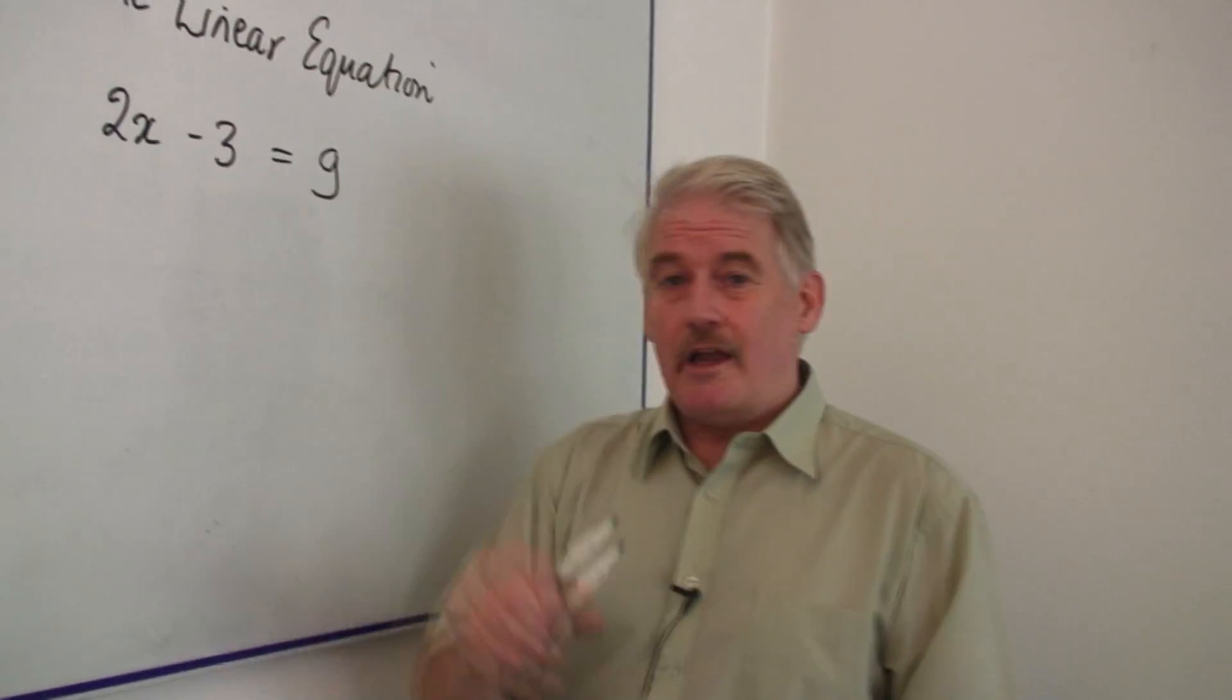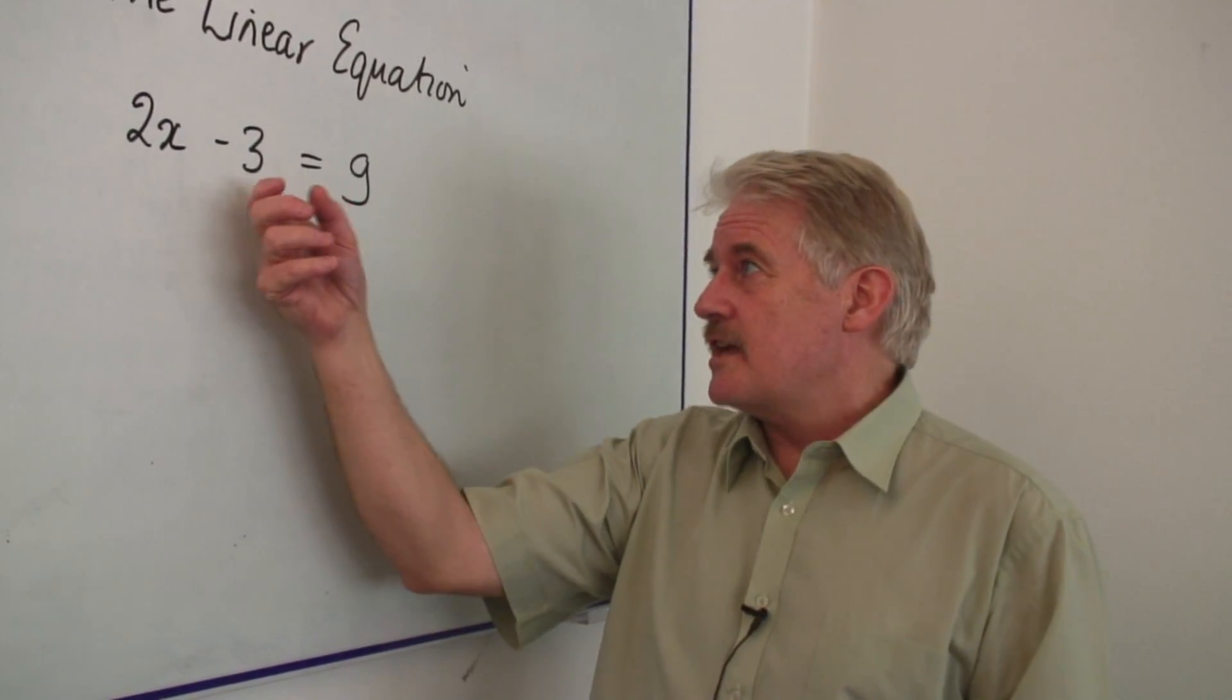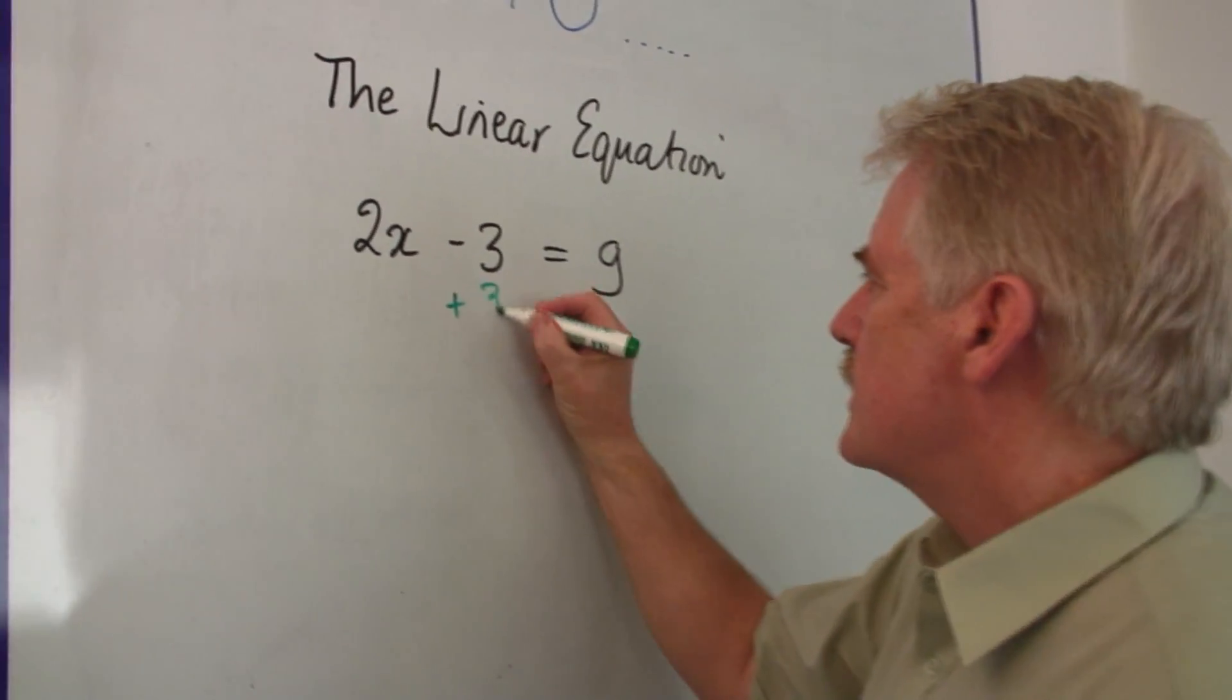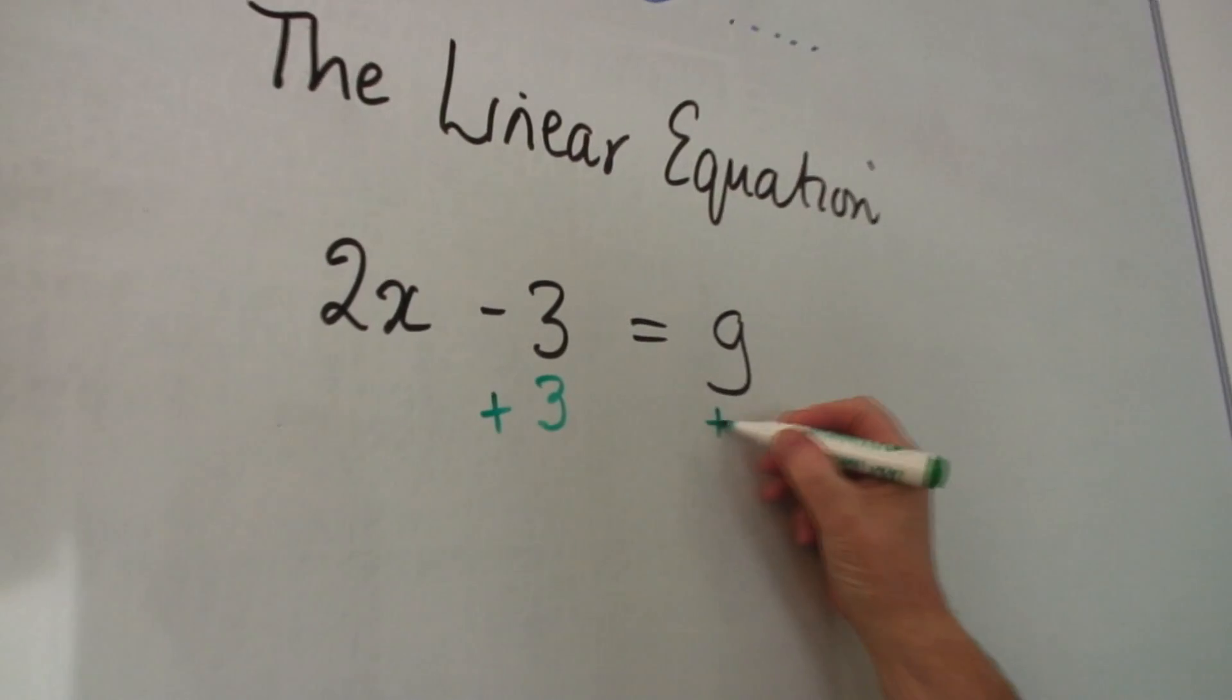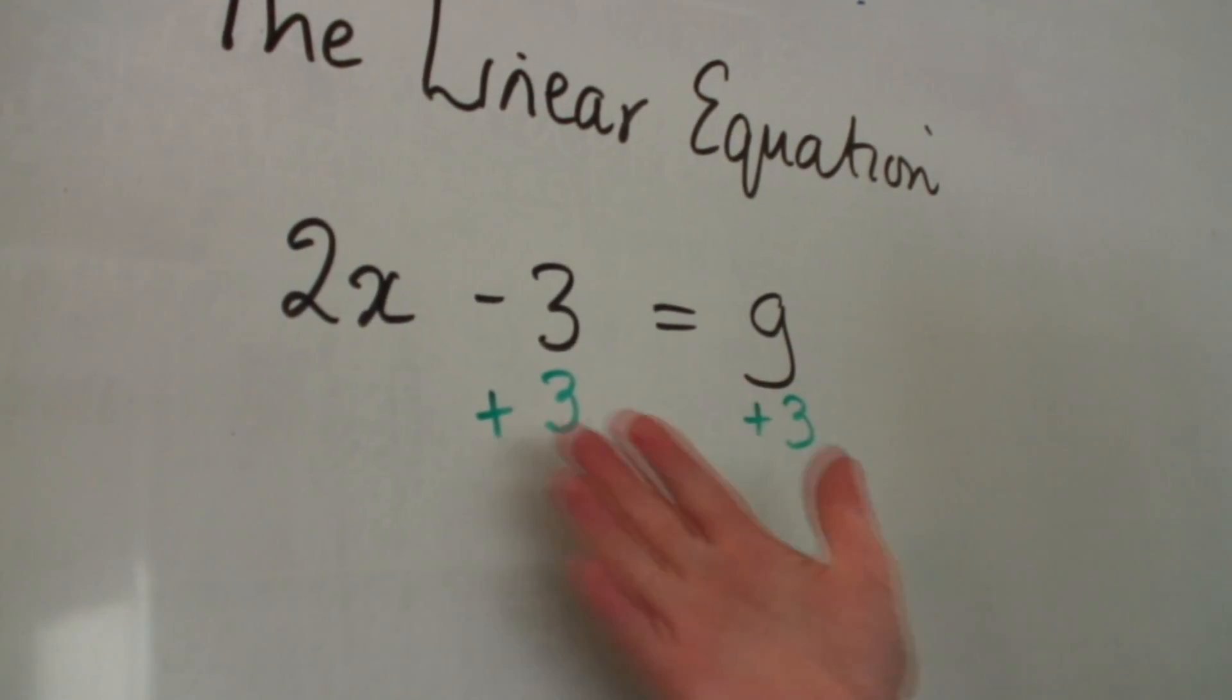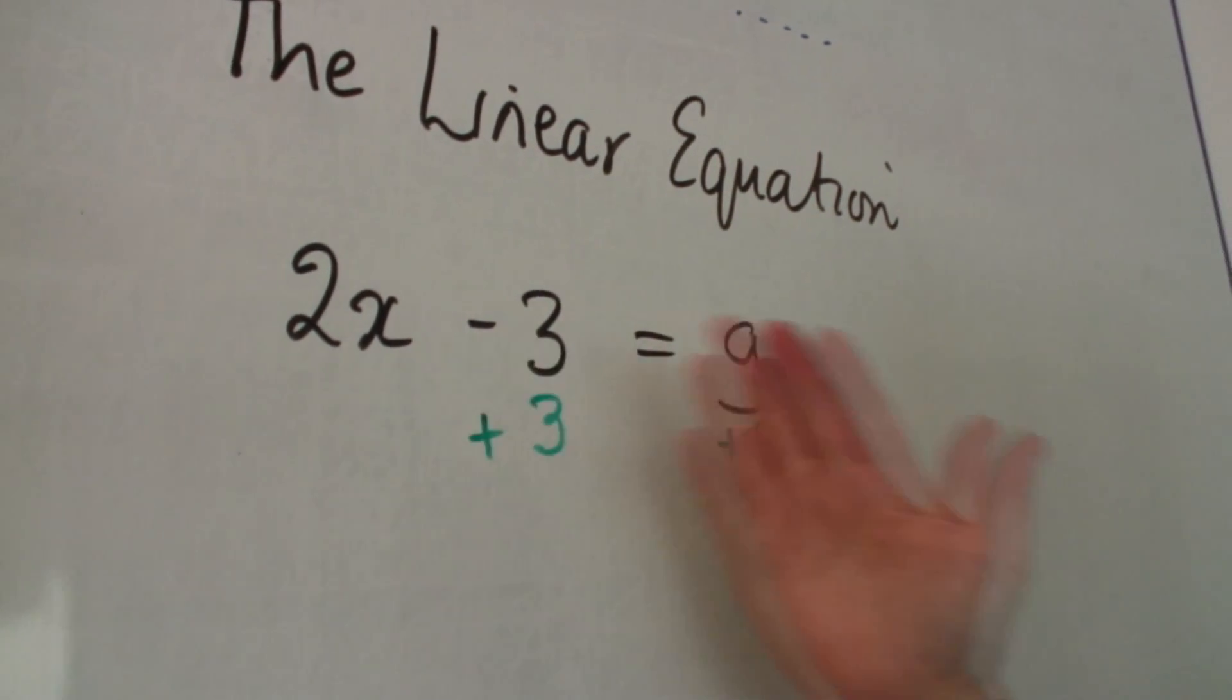So my equation, I do exactly the same. If I do the same to both sides, then they're still equal. So what about if I add 3 to this side? I must add 3 to that side because they're equal. If they're equal, they stay equal.